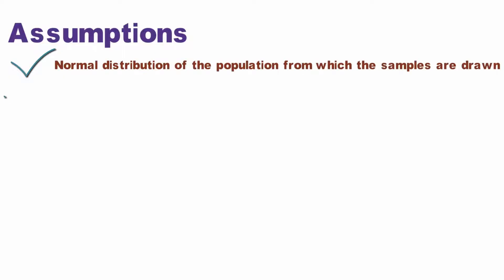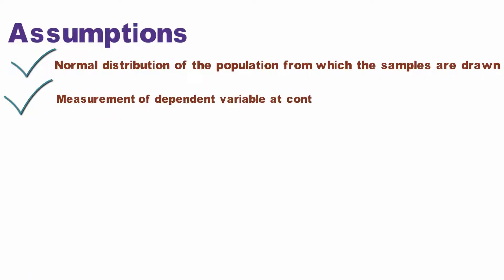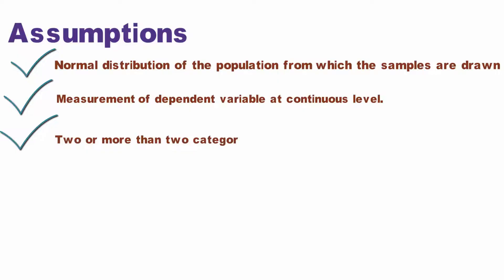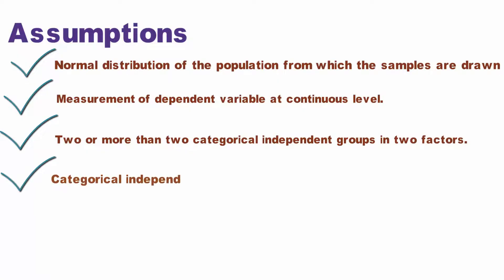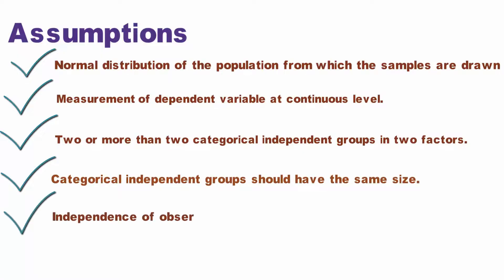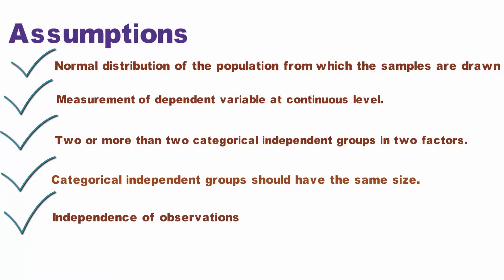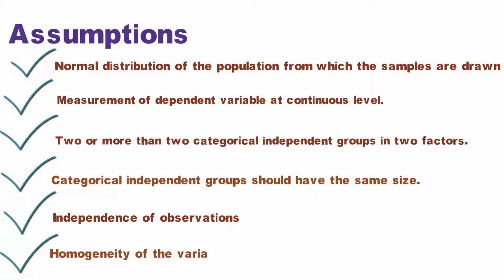Assumptions of two-way ANOVA: one, normal distribution of the population from which the samples are drawn; two, measurement of dependent variable at continuous level; three, two or more than two categorical independent groups in two factors; four, categorical independent groups should have the same size; five, independence of observations; six, homogeneity of the variance of the population.